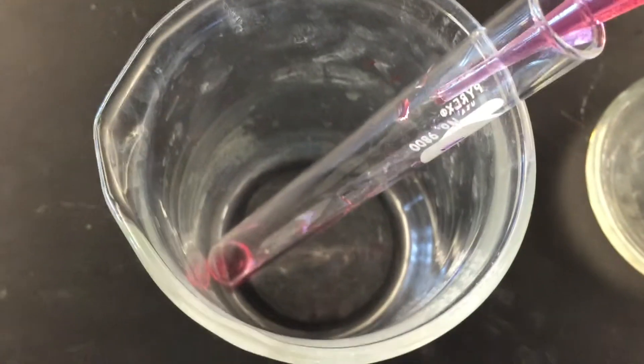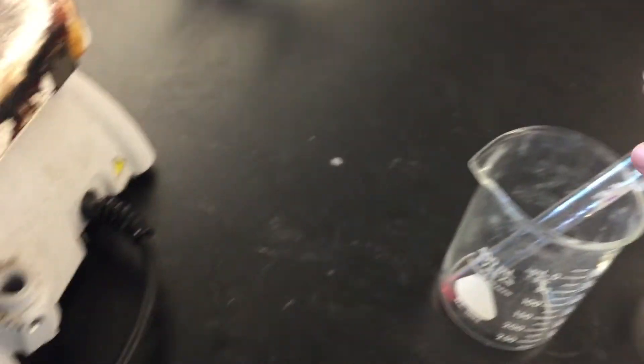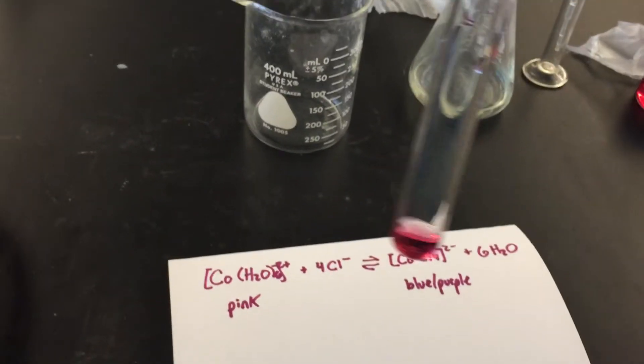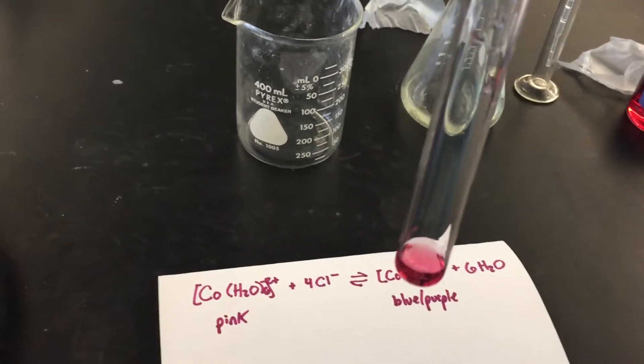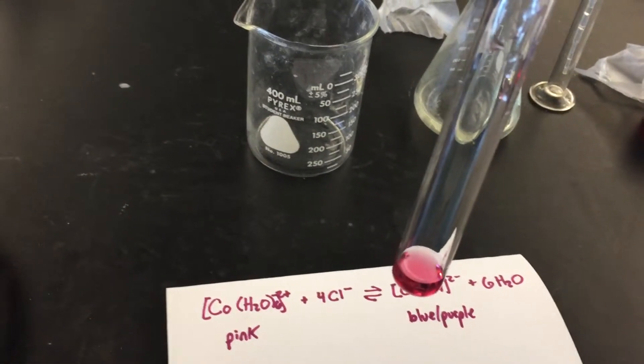That's probably enough. Inside this test tube, I now have my cobalt complex with a pink color. If I want to upset this compound, which right now is in perfect equilibrium, all I have to do is either add or take away something.